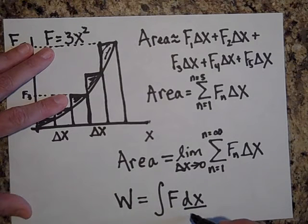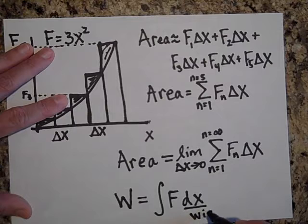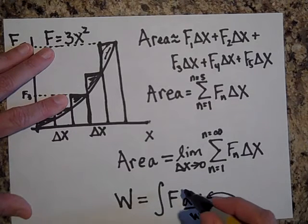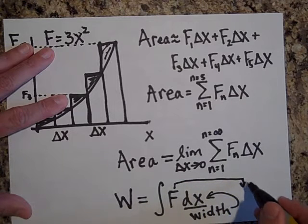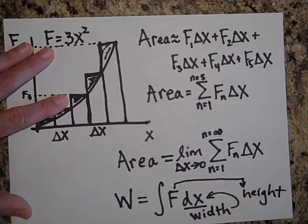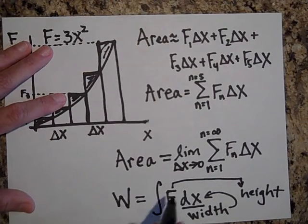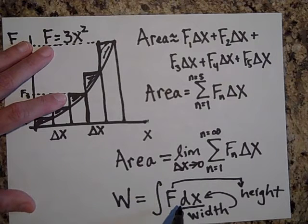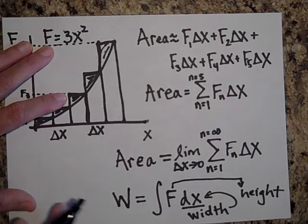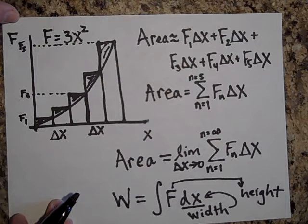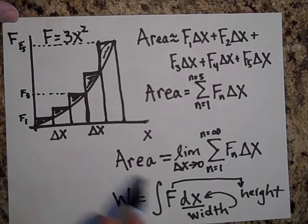dx right here, this is the width of the rectangles, and this right here is the height of the rectangles. So we have a width times a height, and we know there's an infinite amount of them because whenever you see dx you can assume that means an infinitesimally small width or distance.